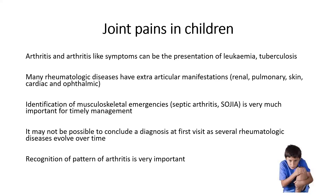Certain conditions presenting as arthritis can have serious consequences unless addressed on time. For example, septic arthritis requires prompt IV antibiotics plus or minus ultrasound-guided drainage or open arthrotomy, or the child can lose the joint. Similarly, systemic juvenile idiopathic arthritis can lead to complications without timely treatment, so early diagnosis is essential to prevent severe complications.